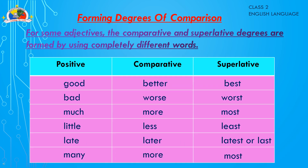For some adjectives, the comparative and superlative degrees are formed using completely different words. For example: good → better → best; bad → worse → worst; much → more → most; little → less → least; late → latter → latest or last; many → more → most. These are irregular adjectives that form their comparative and superlative with completely different words.